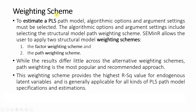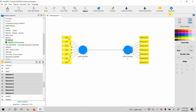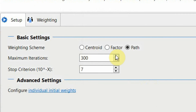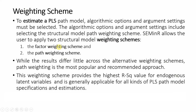Another important point is the weighting scheme. When estimating a model in SmartPLS, let's go to Calculate PLS Algorithm, and here we see the weighting scheme. There are primarily three options: centroid, factor, and path. We are going to focus on whether to select path or factor. While the results differ little across the alternative weighting schemes, the path weighting scheme is the most popular and recommended approach. This scheme provides the highest R-square value for the endogenous latent variable and is generally applicable for all kinds of PLS path model specification and estimation.